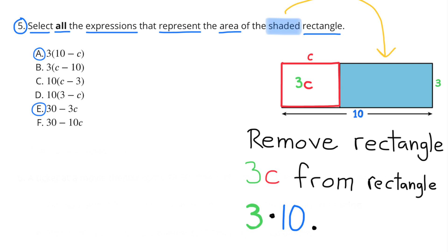Number 5: Select all the expressions that represent the area of the shaded rectangle. The dimensions for the shaded rectangle are 3 times 10, and the dimensions for the rectangle highlighted in red is 3 times C. If we remove the rectangle 3 times C from rectangle 3 times 10, we get the area of the shaded rectangle. Expression A would work — that's 3 times (10 minus C) — and expression E would work — that's 30 minus 3C.